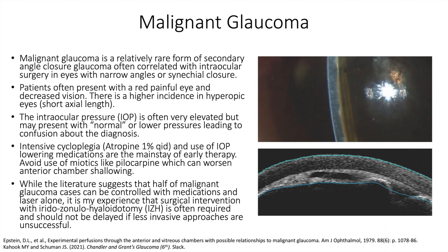One final note: occurrence of malignant glaucoma in one eye increases the risk of occurrence in the contralateral eye at the time of surgery if and when needed. This should prompt prophylactic IZH in the contralateral eye, with proper education and consenting of the patient to set appropriate expectations.